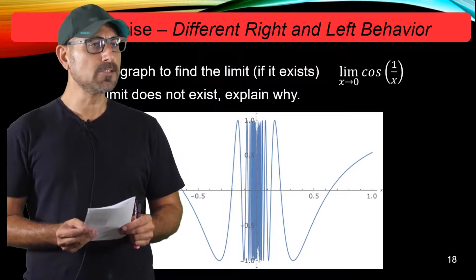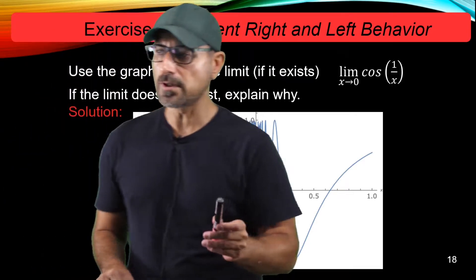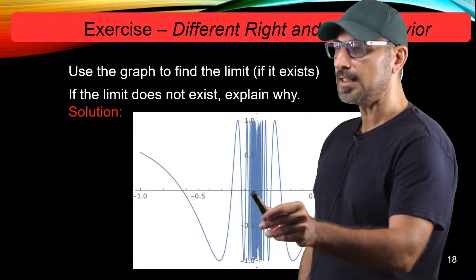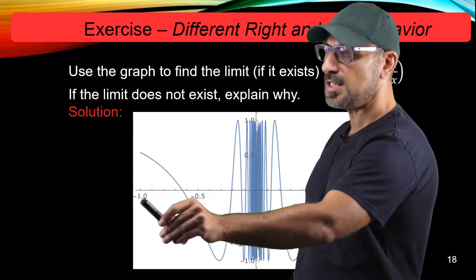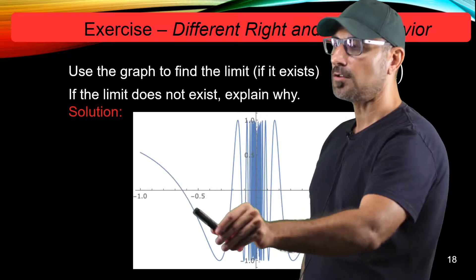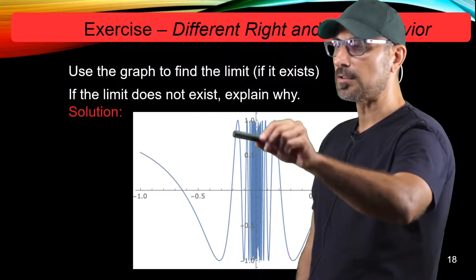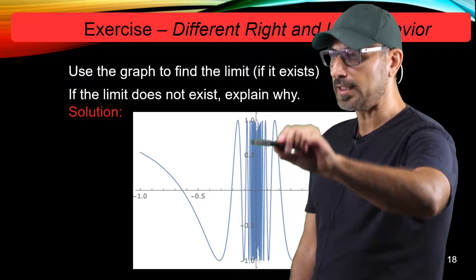Glancing through the graph of the function. So x equals 0, x equals 0 is right here. And then approaching 0 from the left means that you're walking on the blue line. And if you walk on the blue line all the way to x equals 0, as you see, once you get closer and closer to 0, it starts fluctuating.